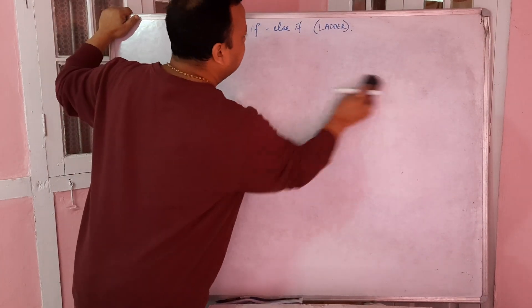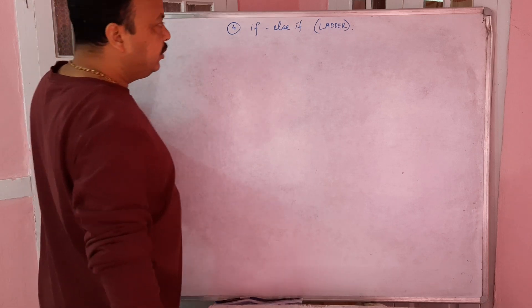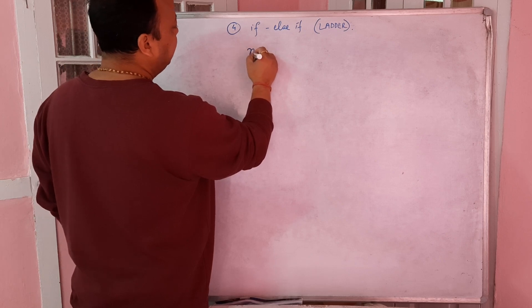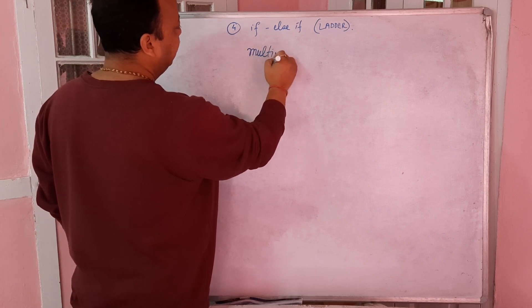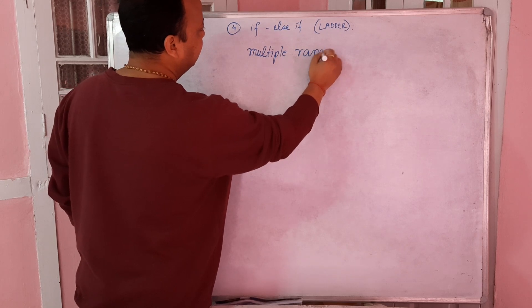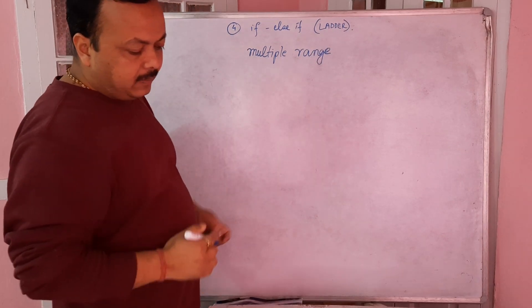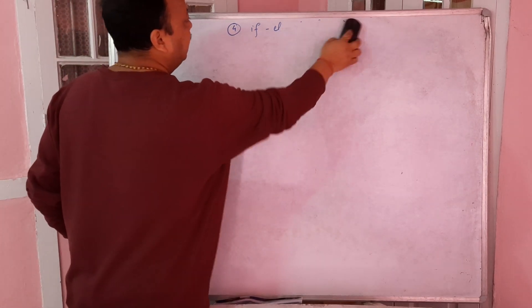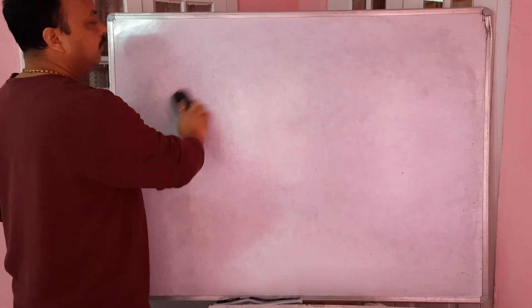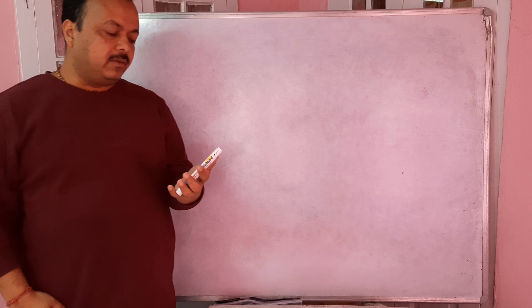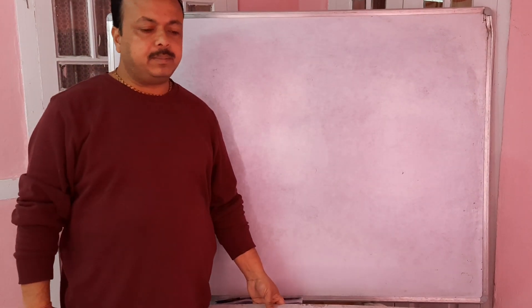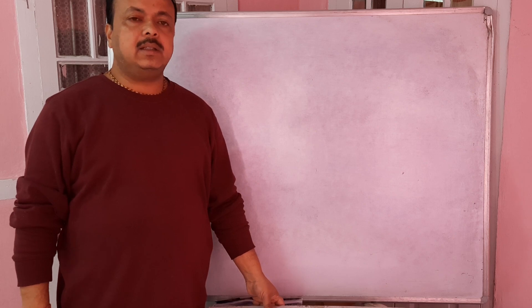Let's take the first one - the if-else-if ladder. This is usually used when you have to check multiple ranges. Currently we are in the month of March and April, and usually in March every employee files their income tax returns. Income tax returns for different persons are calculated in different ways.